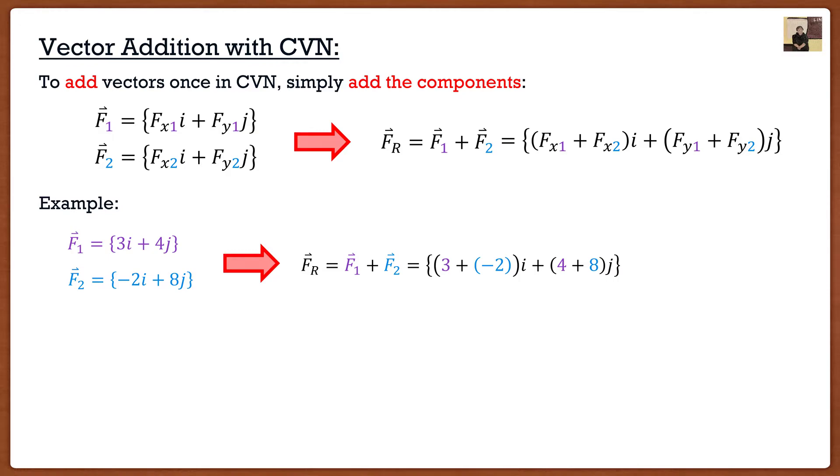This will leave me with my final answer of 1i plus 12j and that's all I have to do to add these two vectors together. I don't have to draw any triangles which is great.